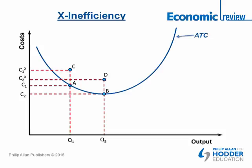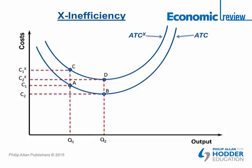This is true for all output levels. In effect, rather than the average total cost curve we assume when drawing models of market structure and competitive environments, we could have an actual cost curve above this level — labelled ATCX — which represents the difference between the cost curve assuming the most efficient method of production is used and the cost curve when we have inefficiency.